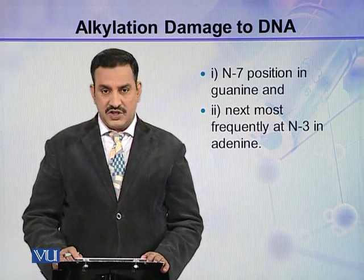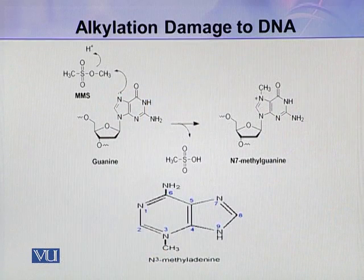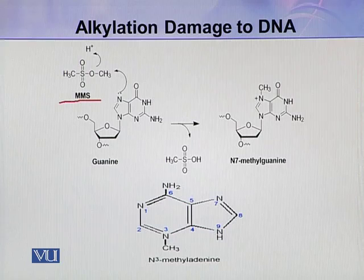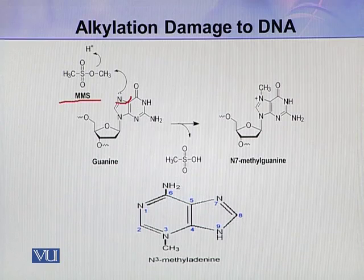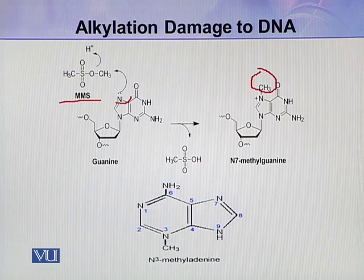The next most frequent methylation takes place at N-3 in adenine. As shown here, MMS attacks N-7 of guanine — this nitrogen in guanine is electron rich, so it is attacked by these electrophilic agents. After that attack, a methyl group is transferred to N-7, forming N-7 methyl guanine, and in this way the DNA is methylated.